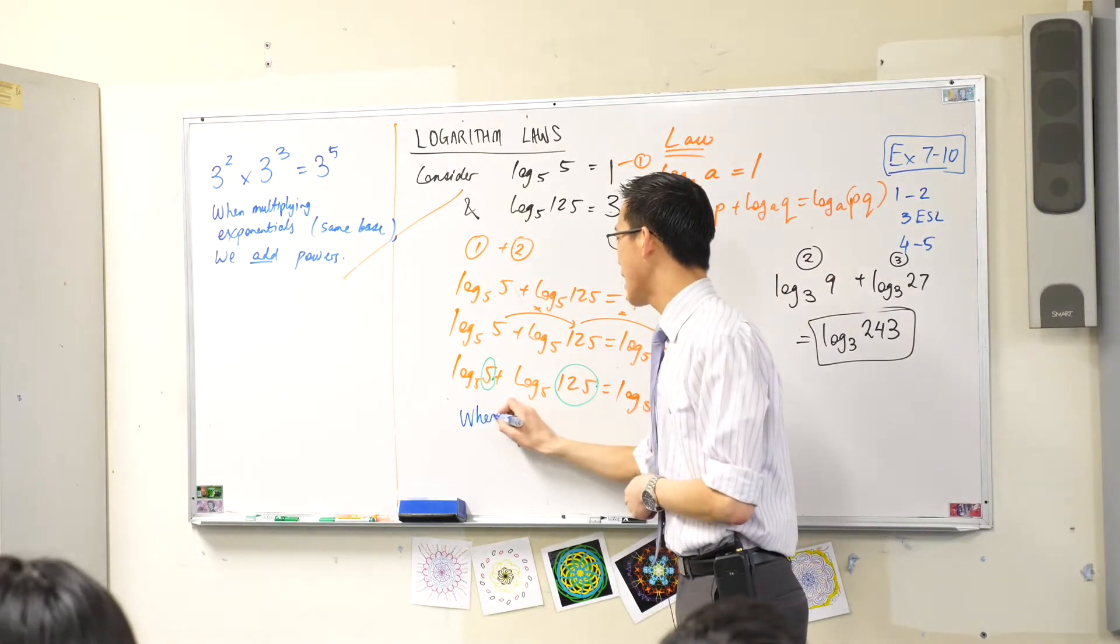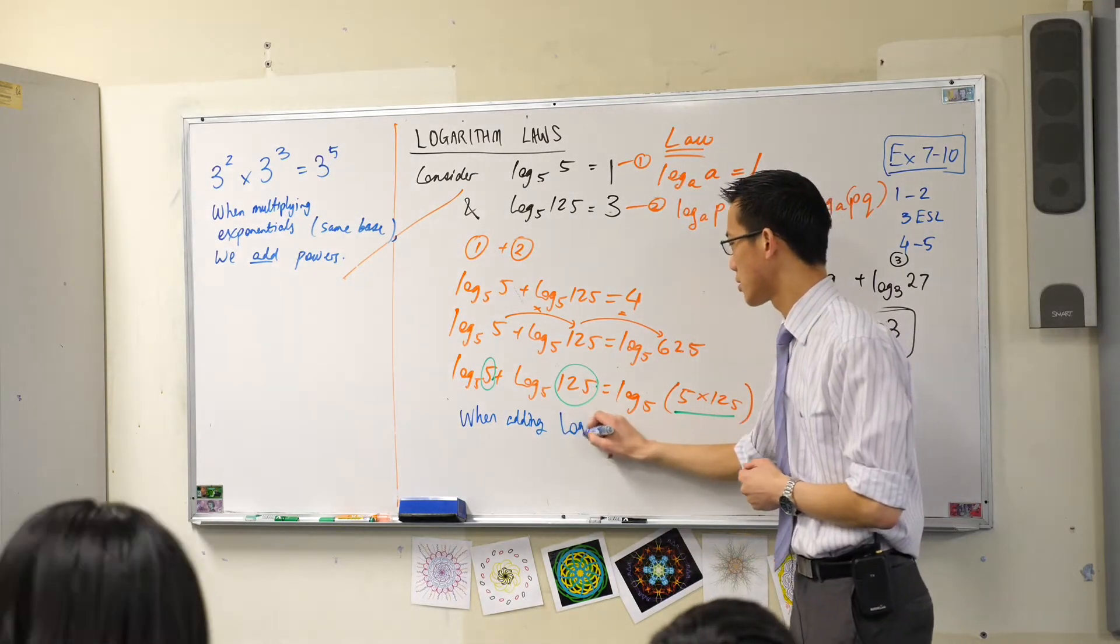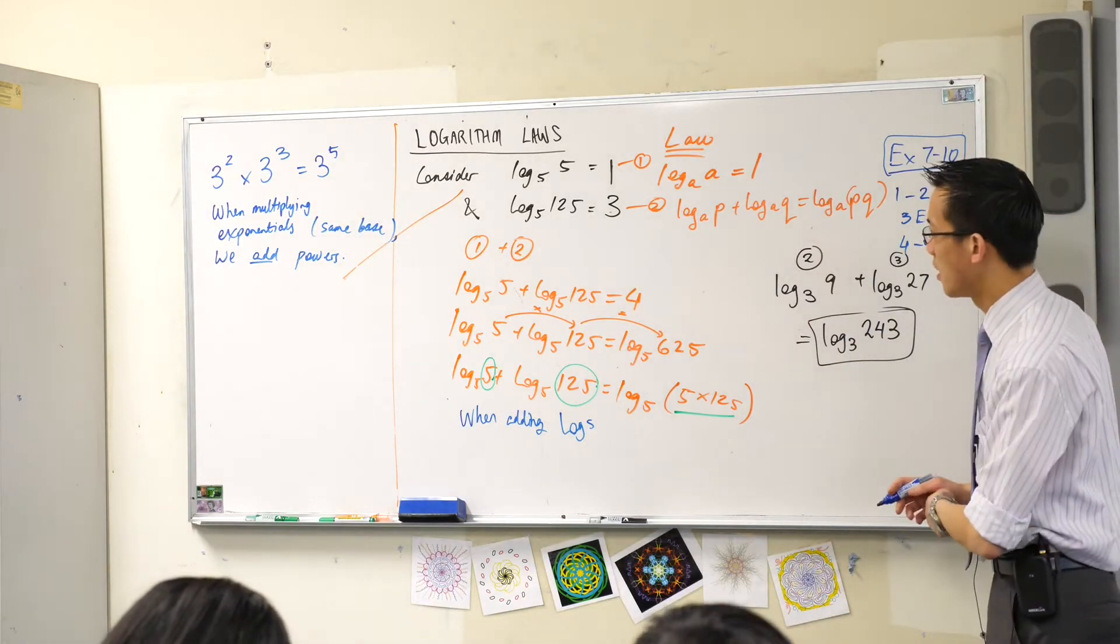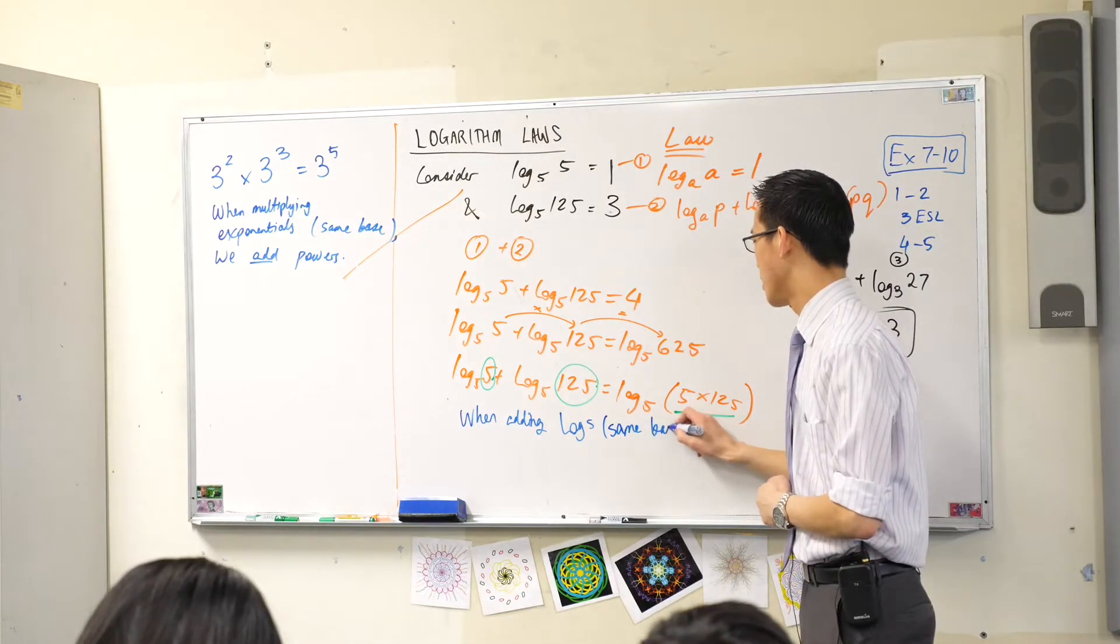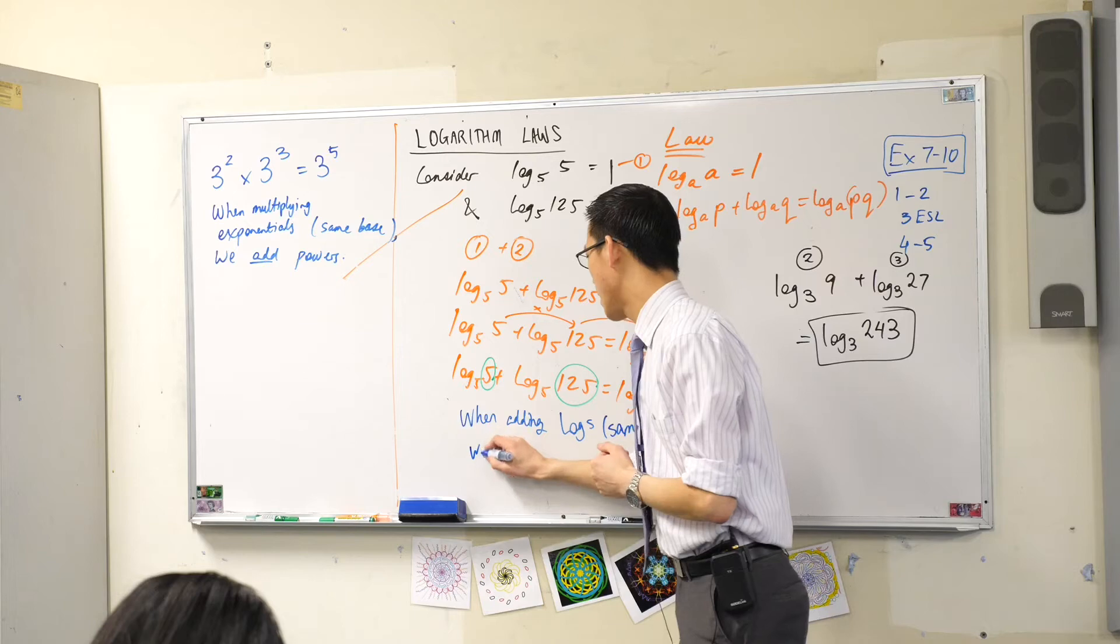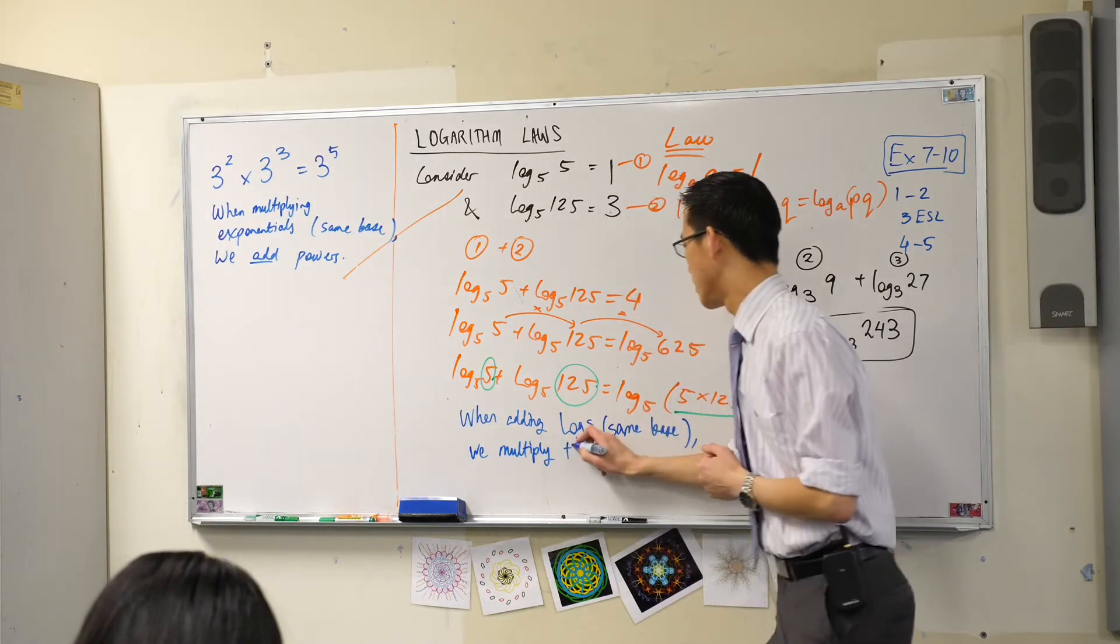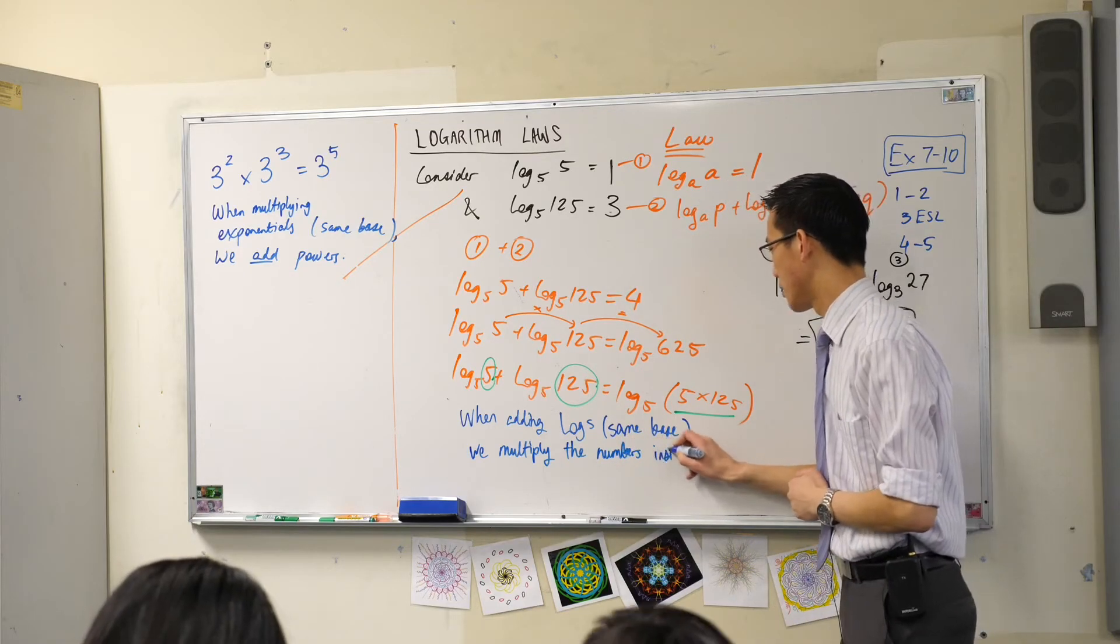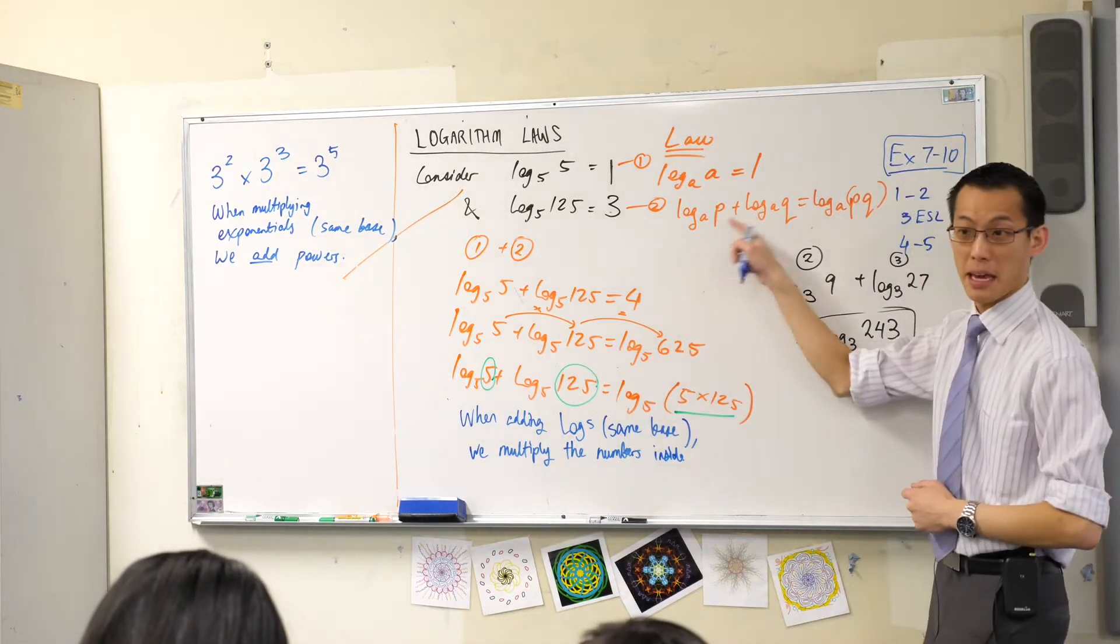So when adding, not exponentials but logs or logarithms, right? I'm just going to write logs just because it's a bit shorter. When adding logs, and again it's got to be with the same base, we multiply the numbers inside the logs. In this case it was 5 and 125, in this case it was P and Q.